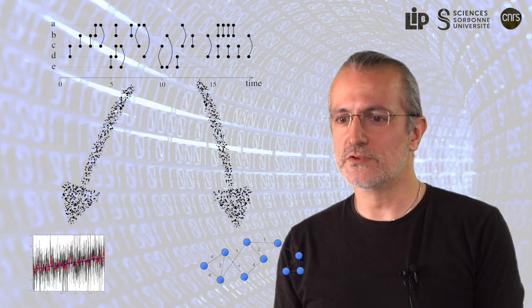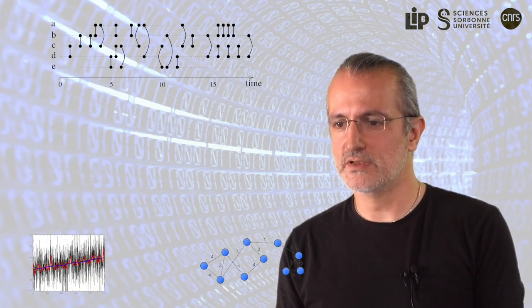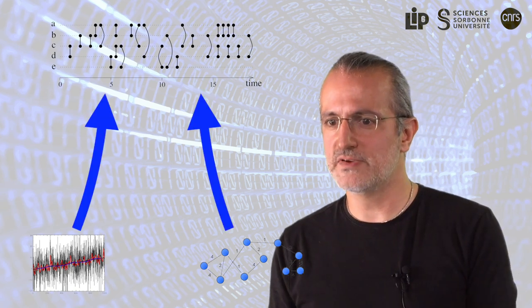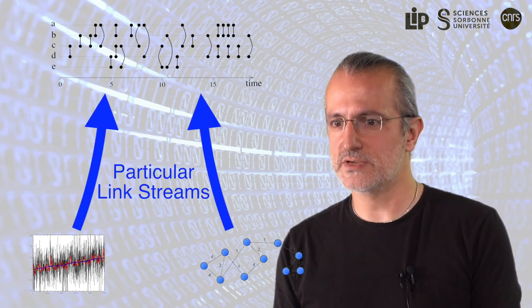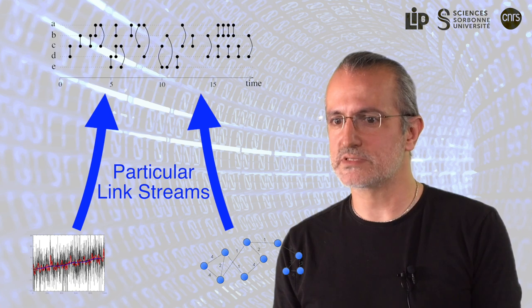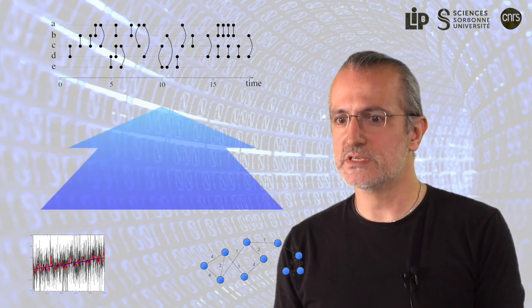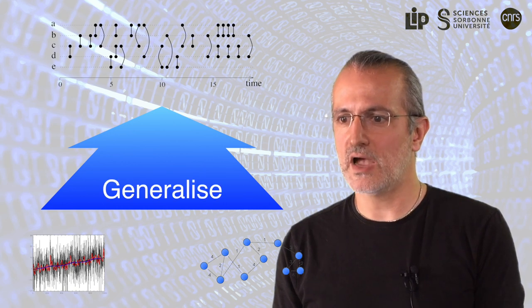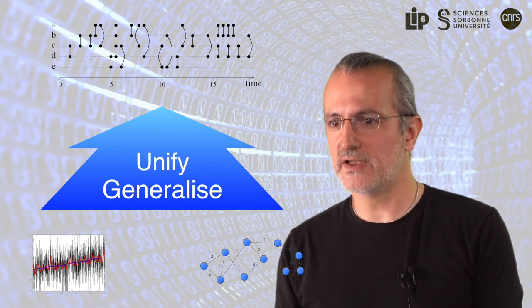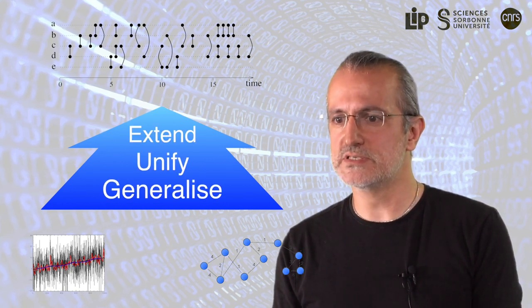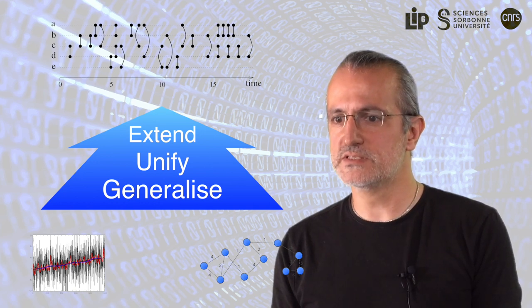Link streams are not graphs or time series with additional information. Instead, I have shown that both graphs and time series are particular link streams. Therefore, instead of transforming link streams into graphs and time series, I propose to generalize, unify, and extend graphs and time series into a theory of link streams themselves.